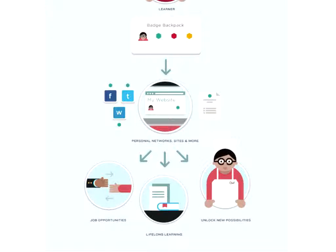Once the badges are in your backpack, you are then able to send them to displayer-type sites — Facebook, Twitter, WordPress, your website. From there, other people who are your audience will be able to view those badges, which can lead to job opportunities. It gives you a map of your lifelong learning — it shows you where you've gone. And by looking at other badges, you can actually start to see which directions you might want to go in as well. They kind of act like markers behind you, but they also act like way markers as something that you can set out for.